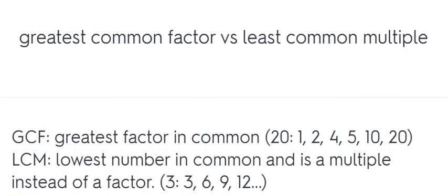Greatest common factor versus least common multiple. GCF: greatest factor in common. LCM: lowest number in common and is a multiple instead of a factor.